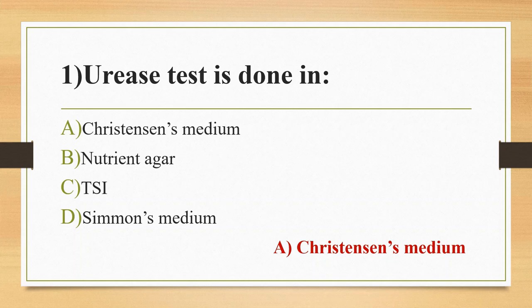Urease test is used to determine the ability of an organism to split urea by the enzyme urease. In Christiansen's Medium, Phenol Red is the indicator. If the organism is urease positive, the media will change color from light orange to pink.